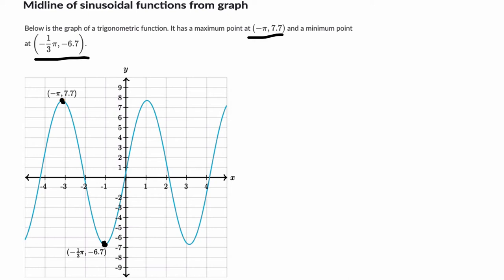So the midline is literally in the middle. And in this case, when you are given a max and a min, perhaps the easiest way to deal with this problem is to average them. So you take your highest point, add it to your lowest point, and divide them by 2. You're averaging the two heights.